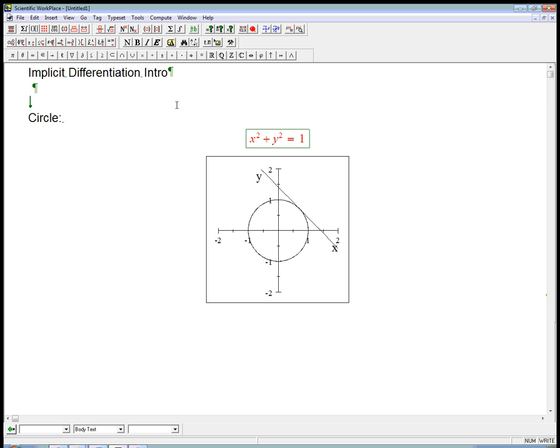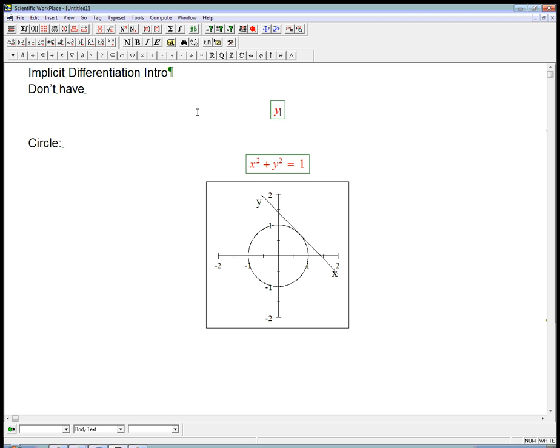The idea is that very often we don't have y given as an explicit function of x, so we don't have y equals f of x with the y solved for. For example, my favorite example, and it's going to be very similar to the book's example, is a circle.